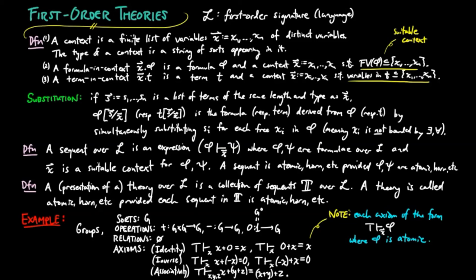This is an example of a single-sorted algebraic theory, i.e., one which has a single sort, no relations, and the axioms of the type above. We will examine algebraic theories more in a subsequent video.